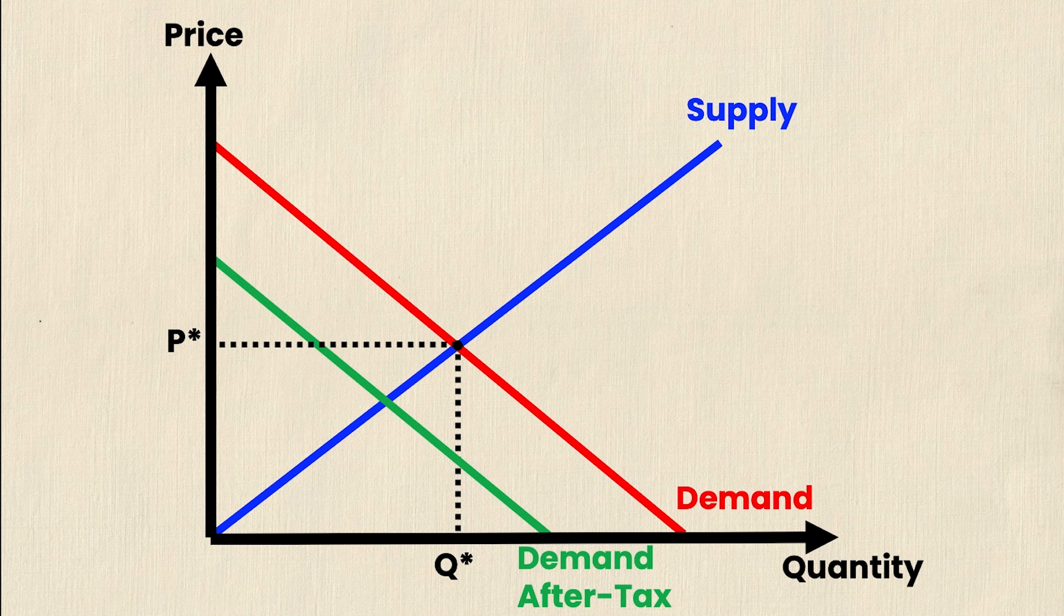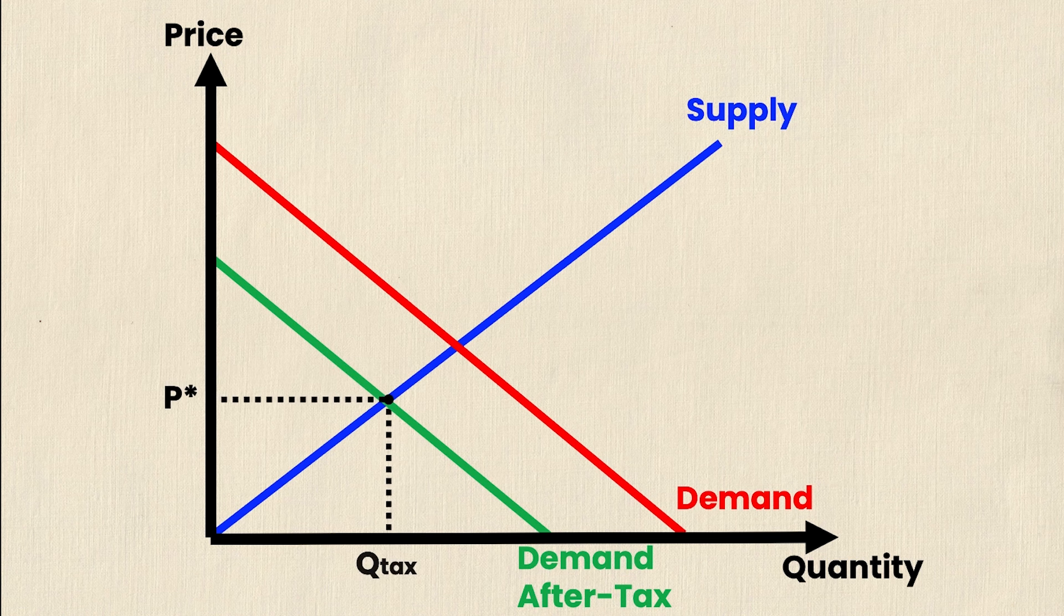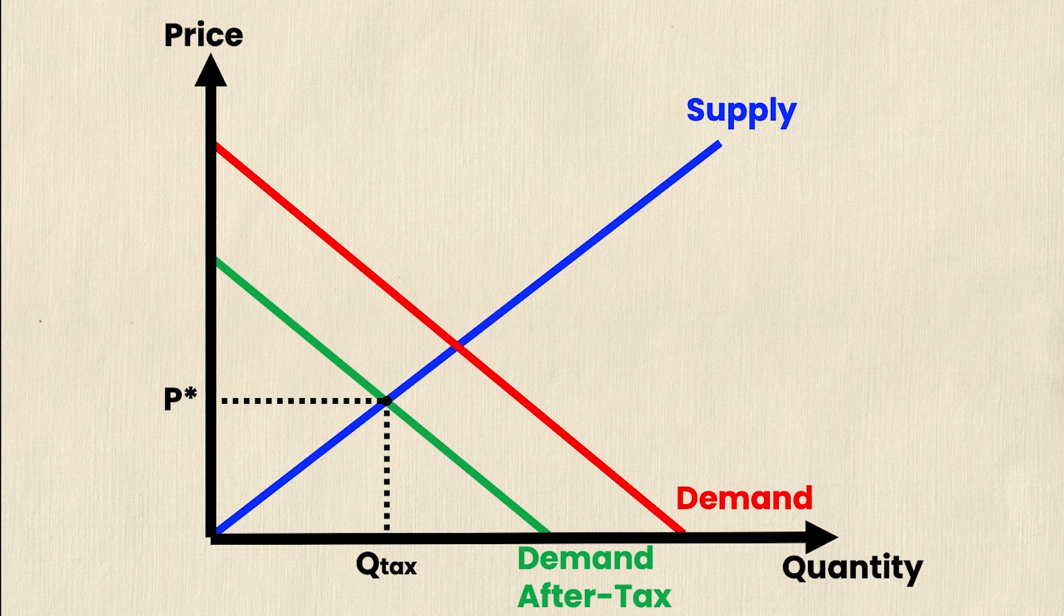And we'll notice that our equilibrium has now changed to this point here, where we have P star and Q tax. And again, this is where the supply curve, which hasn't changed, intersects the new demand curve, which is demand after tax, which is strictly to the left or lower than the original demand curve.